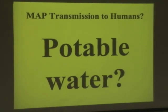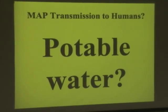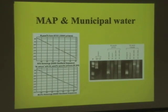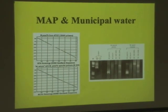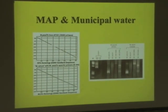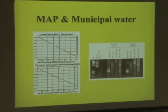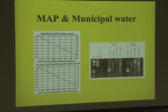In that last PNAS paper we also showed that a sample isolated from the potable water supply of Los Angeles was in fact paratuberculosis.